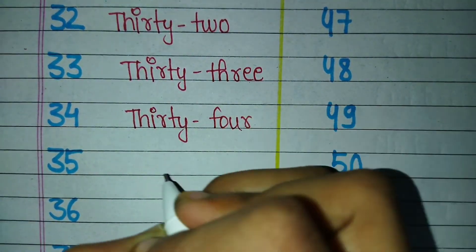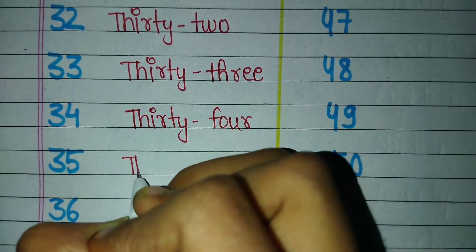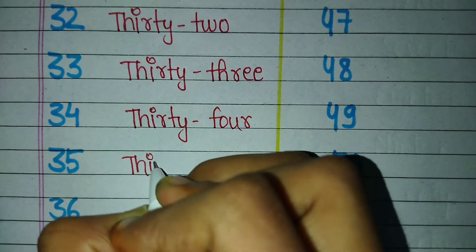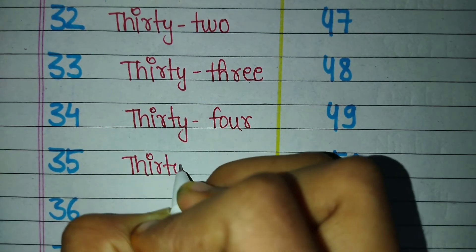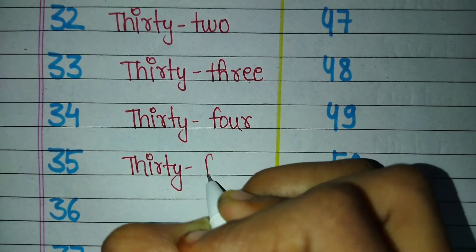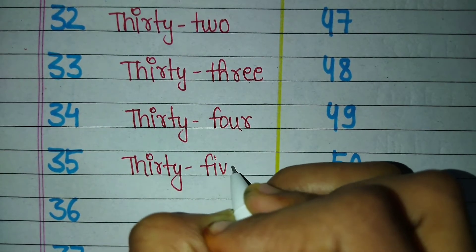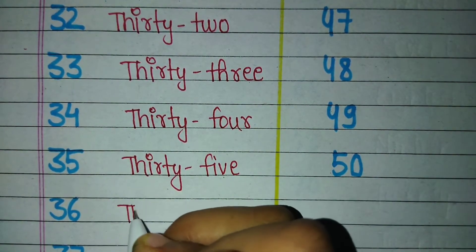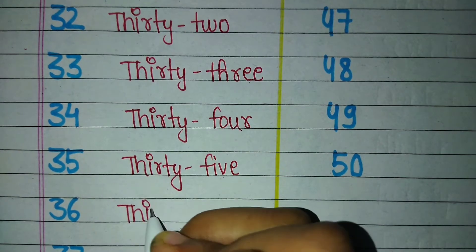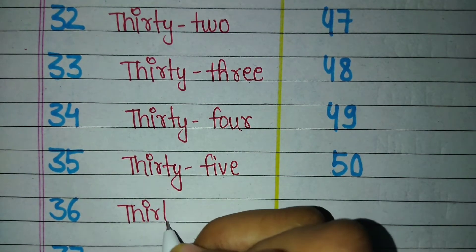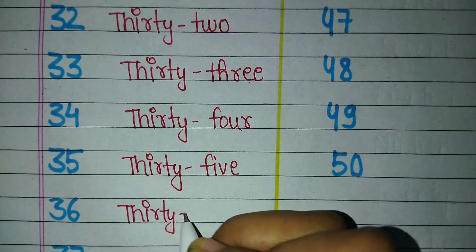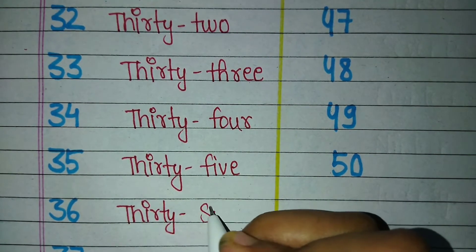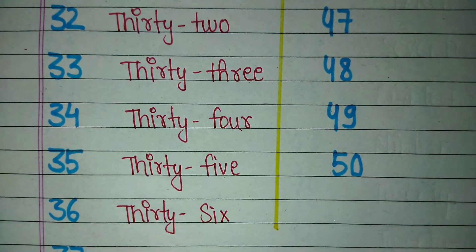Thirty-four — T-H-I-R-T-Y — 30, F-O-U-R — 4 — 34. Thirty-five — T-H-I-R-T-Y — 30, F-I-V-E — 5 — 35. Thirty-six — T-H-I-R-T-Y — 30, S-I-X — 6 — 36.